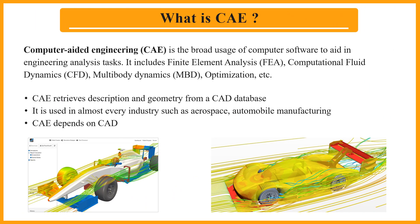Next, what is CAE? CAE stands for Computer Aided Engineering — it's all about using software to analyze and optimize designs. It integrates closely with CAD, or Computer Aided Design: while CAD focuses on creating a design's geometry and appearance, CAE tests and improves it. For example, imagine designing a smartphone in CAD and using CAE to ensure it survives drops and resists overheating. CAE broadly includes Finite Element Analysis, Computational Fluid Dynamics, multibody dynamics, and optimization. It retrieves geometry from a CAD database and is used in almost every industry, including aerospace and automobile manufacturing.